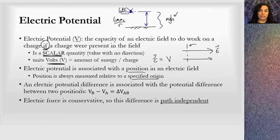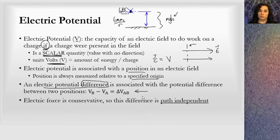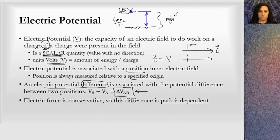A special property of electric potential is that we frequently think in terms of electric potential difference, associated with the potential difference between two positions. The advantage is we don't actually need to know the potential of one position — we don't need to know the values of potential A or potential B. All we care about is the potential difference between those two points, which contributes to any change in motion of a charged object. The electric force is conservative, so these differences are path independent.